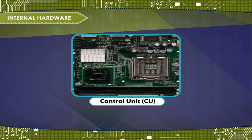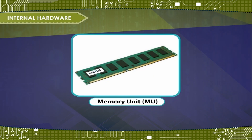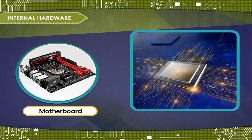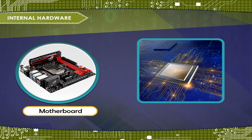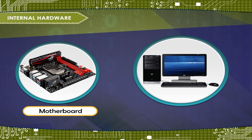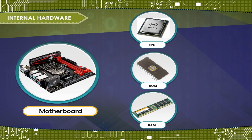The three components are: Control Unit (CU), Arithmetic and Logical Unit (ALU), and Memory Unit (MU). Motherboard: a motherboard is the main printed circuit board (PCB) found in general purpose microcomputers and other expandable systems. It holds and allows communication between many of the crucial electronic components of a system, such as the CPU and memory, and provides connectors for other peripherals.